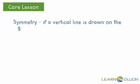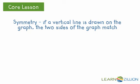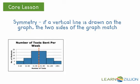Next, we look at symmetry. If a vertical line is drawn in the graph, are the two sides the same? So if we look at our histogram, we can put our vertical line in here, and the two sides are mirror images of each other. So we would say that is symmetrical.